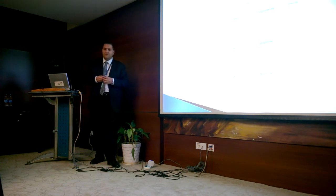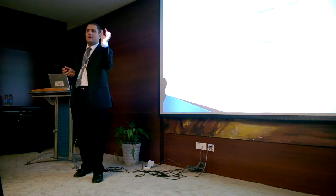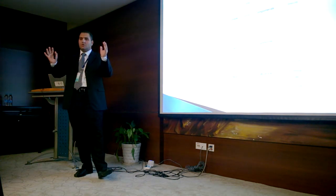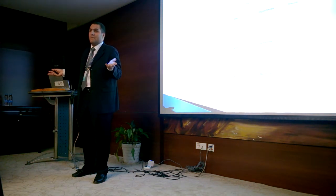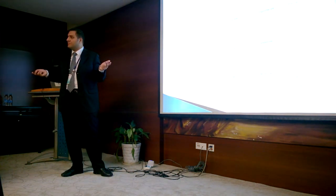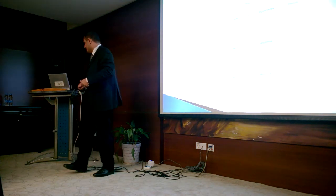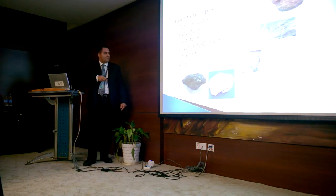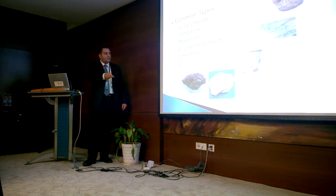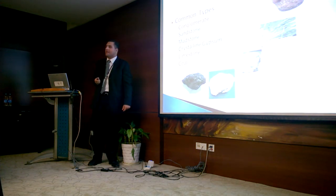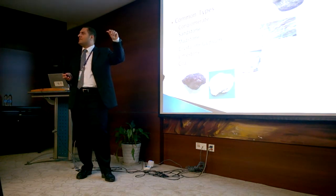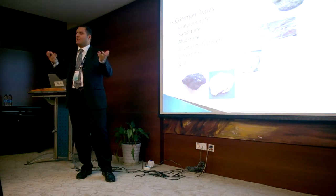In brief, sedimentary rocks are formed from sediments from other rocks, or from chemical precipitation from chemical reactions, or biochemical processes like in coal. Crystalline gypsum and limestone are examples of chemical precipitation rocks. Conglomerate, sandstone, and mudstone are all examples of clastic rocks, where sediments of different rocks are conjoined to form a new rock.